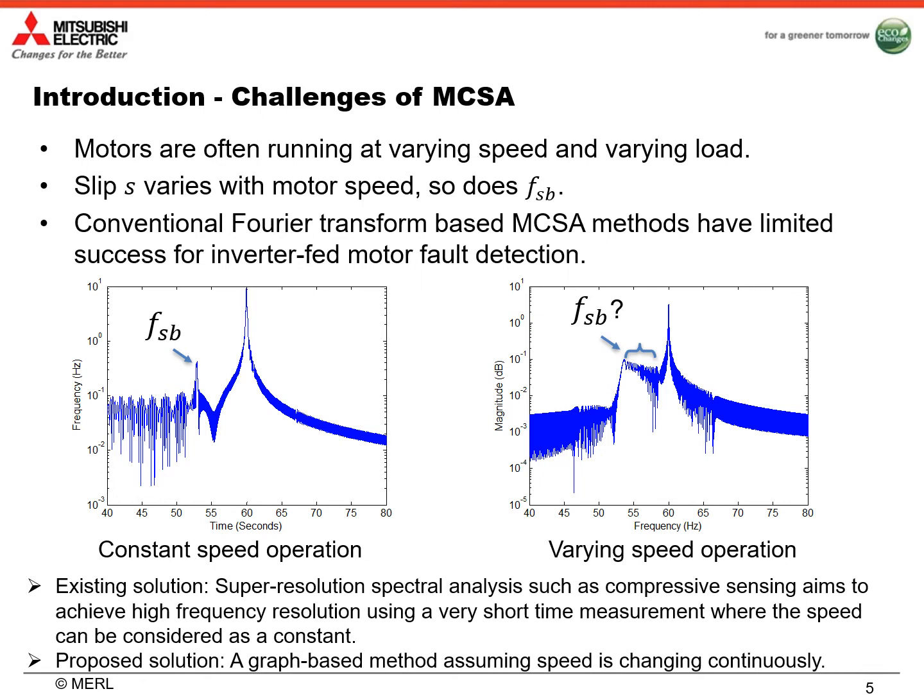To solve this problem, super-resolution spectral analysis such as compressed sensing aims to achieve high frequency resolution using a very short time measurement, where the speed can be considered as a constant. However, this method may suffer from noisy measurements. In this paper, we proposed a graph-based method which assumes the speed is changing continuously. Using our proposed method, we can still effectively extract the fault signature even under varying speed operation.